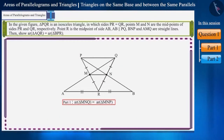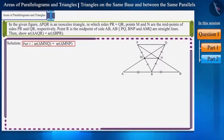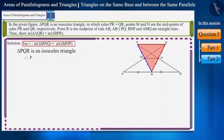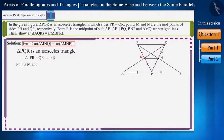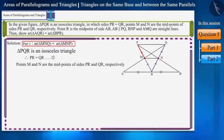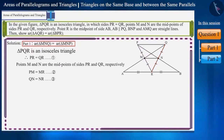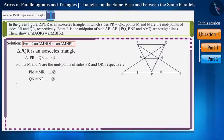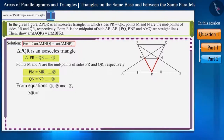Let's look at the first part. It's given that triangle PQR is an isosceles triangle in which side PR is equal to side QR. It's also given that points M and N are the midpoints of sides PR and QR respectively. Therefore, PM will equal MR and QN will equal NR. From these equations, we can say that side MR will be equal to side NR. Let's call this equation 4.